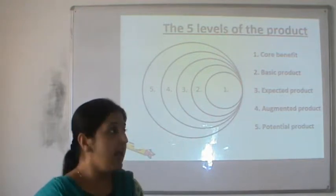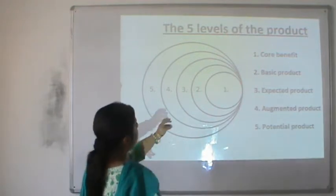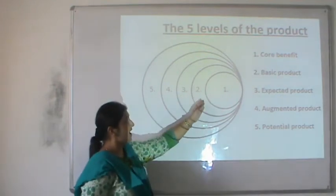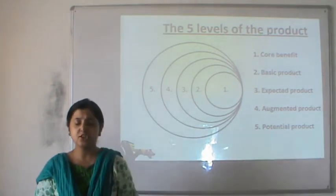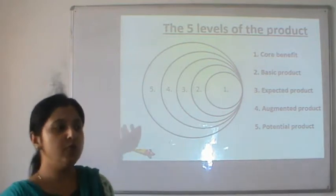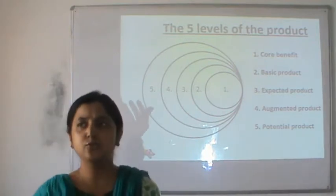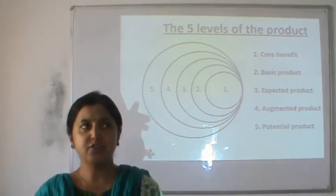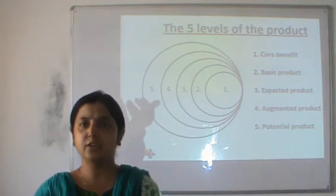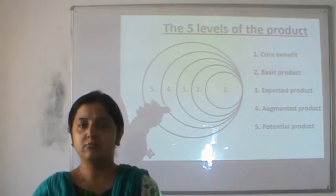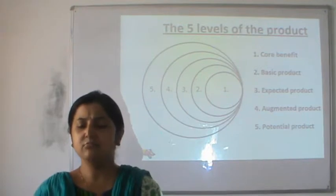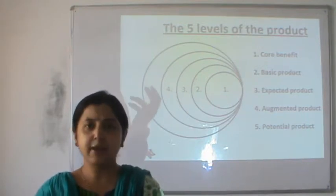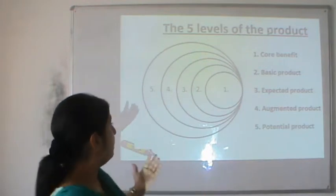If a consumer is paying considerably more than level two, they expect additional advantages — such as fresh water in the room, a flask with glasses, tissues, and clean bedsheets and bedspreads. That is the expected product.